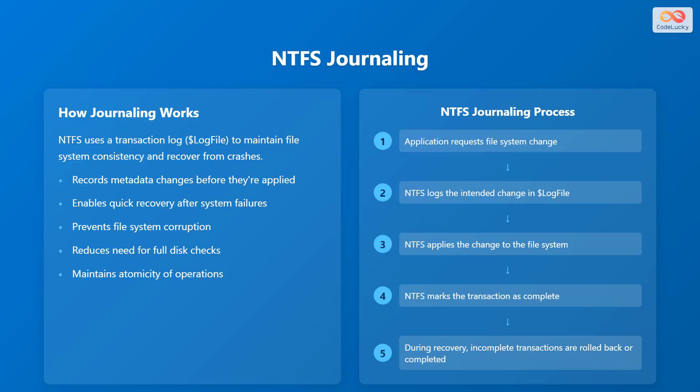The NTFS journaling process works as follows: First, an application requests a file system change. Second, NTFS logs the intended change in the $LogFile. Third, NTFS applies the change to the file system. Fourth, NTFS marks the transaction as complete. Fifth, during recovery, incomplete transactions are rolled back or completed.